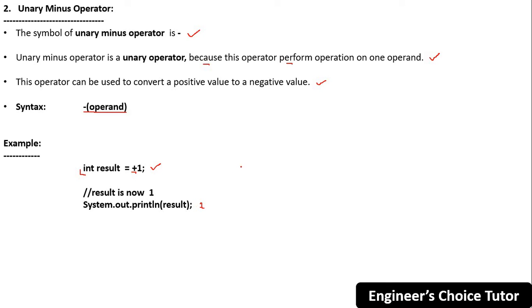And one itself is a positive. See, for the positive number, if you write plus one or if you write simple one, both are equivalent. There is no difference between both. So this is valid. So you will get one in the output console.